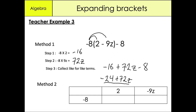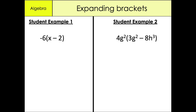Moving on to our fourth example: -6(x - 2). I'm going to repeat the same process — multiply the first term outside the bracket with the first term inside: minus 6 multiplied by x gives minus 6x. Then multiply minus 6 by minus 2: negative times negative gives a positive, so it's positive 12. Our answer is minus 6x + 12.